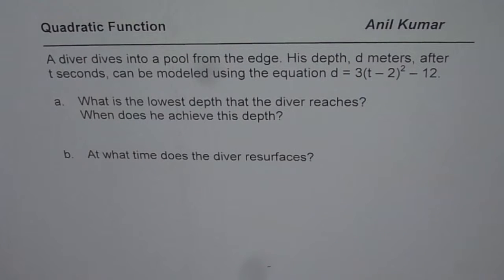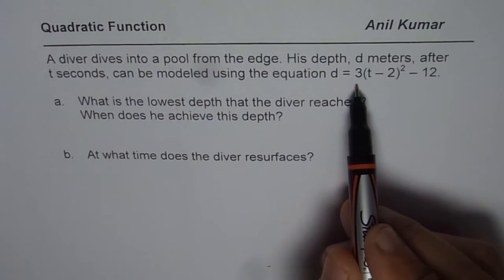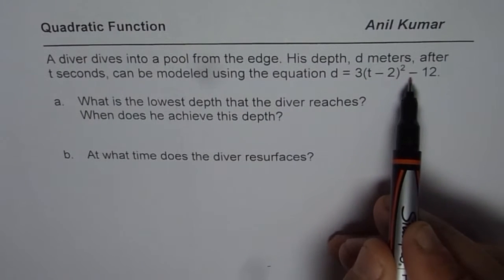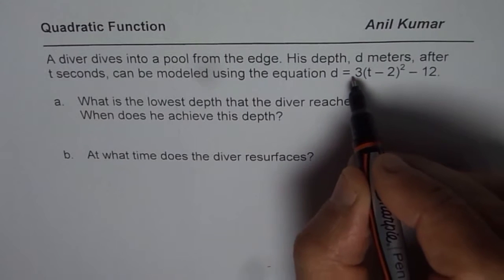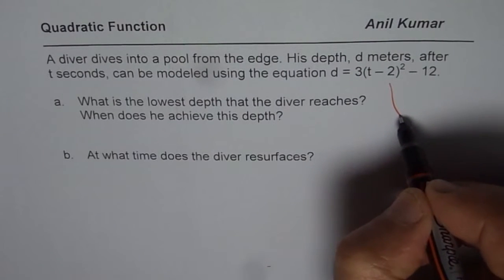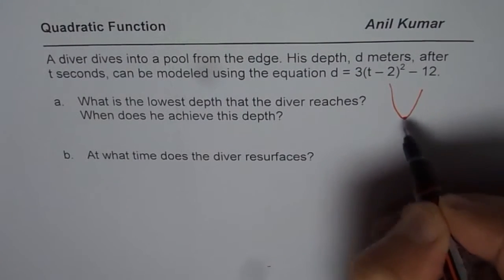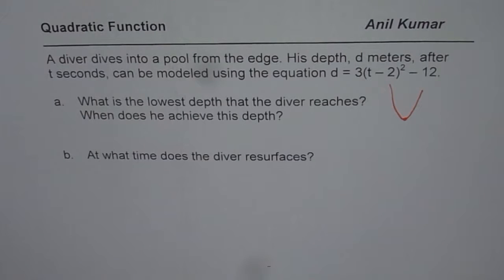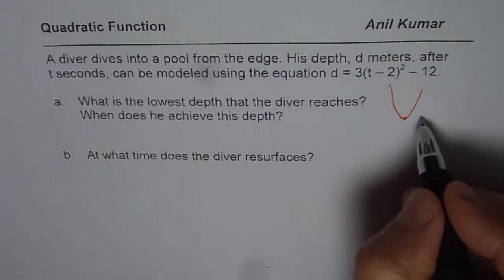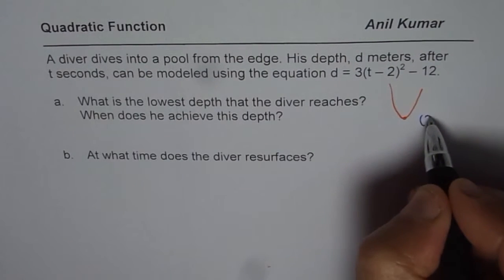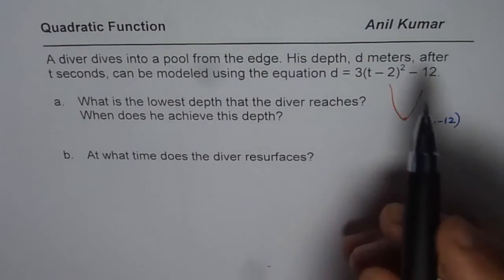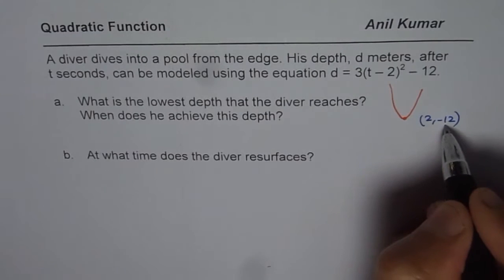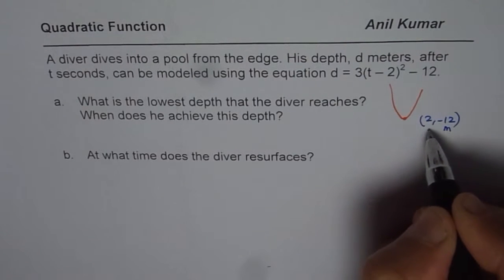Given this equation, d = 3(t - 2)² - 12, it's in vertex form. So we know it opens upward like this, and that's the lowest point and you can read the coordinates. The coordinates for the lowest point are (2, -12), where d is in meters and time is in seconds.